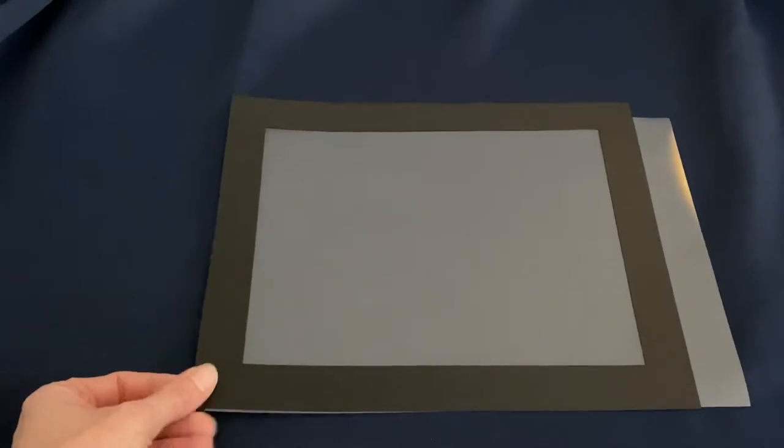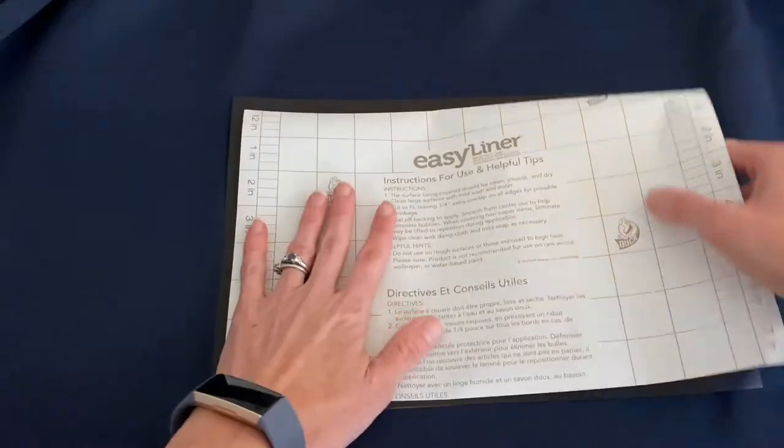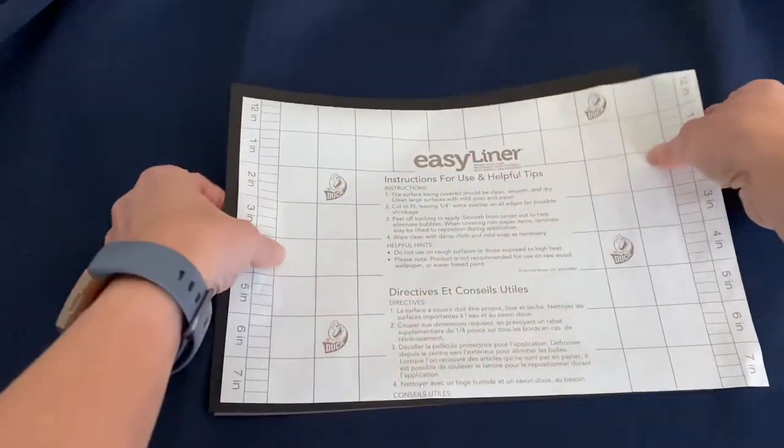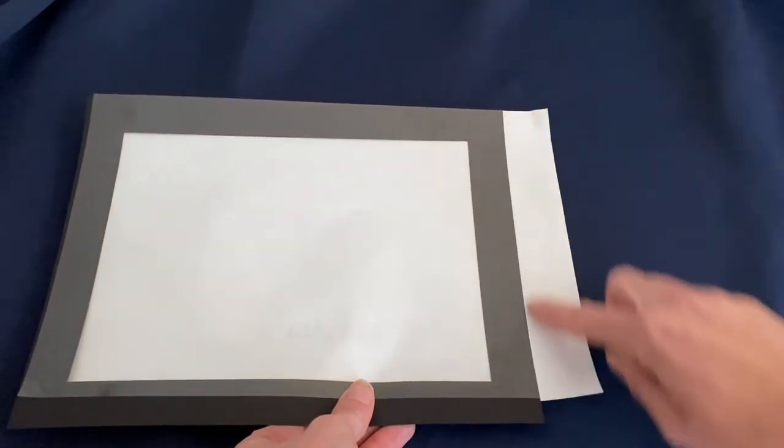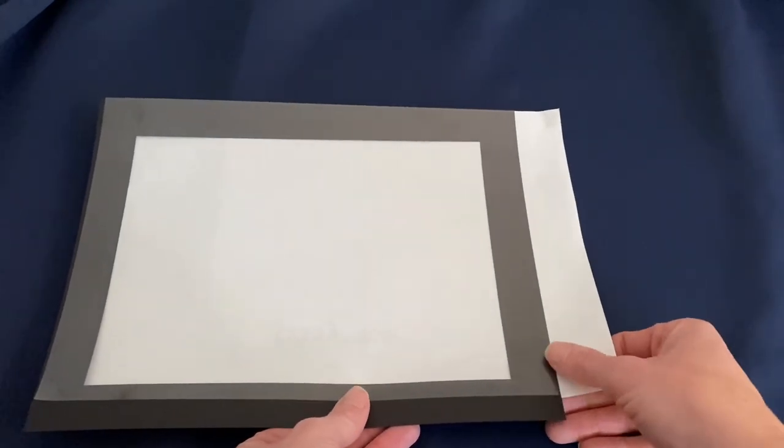You'll have this extra part on back. If you're not doing this project immediately, you can use this backing and stick it back on. That way when you're ready, just peel it right off. You can also cut off this extra edge part - you won't need that.